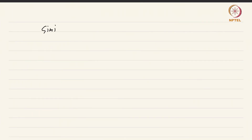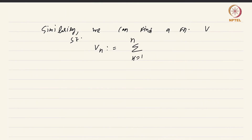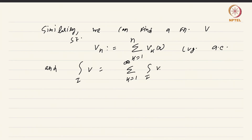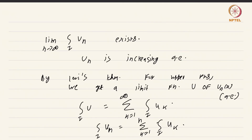Similarly, we can find a function v such that the partial sums V_n(x), defined as the summation from k equals 1 to n of v_k(x), converge almost everywhere, and the integral over I of v equals the summation from k equals 1 to infinity of the integral over I of v_k(x), by exactly the same argument. Both u and v are upper functions, coming from the conclusion of Levy's monotone convergence theorem for upper functions.